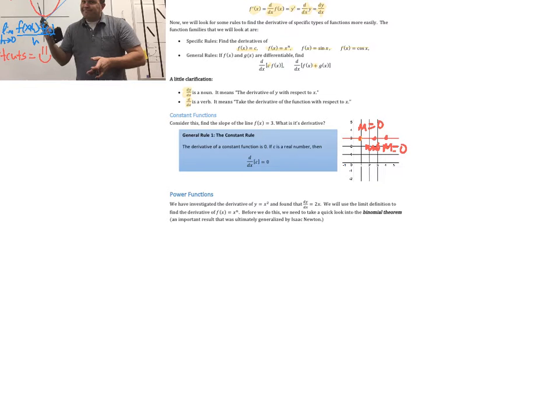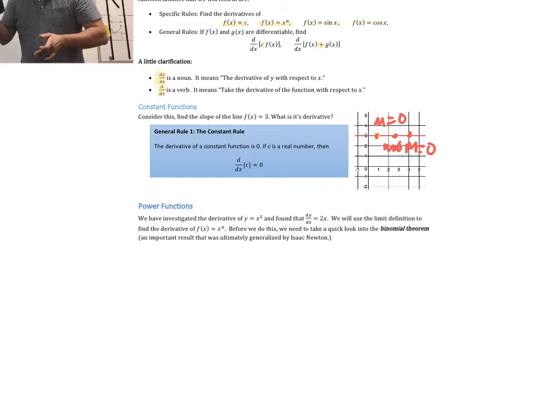What if we have a power — x to some power? We've seen from the limit definition that the derivative of y equals x squared is dy/dx equals 2x. But what about a general x to the n? We need to talk about the binomial theorem for a moment to do a proof. That section is being cut into a separate video — check the other video to see how the binomial theorem works.